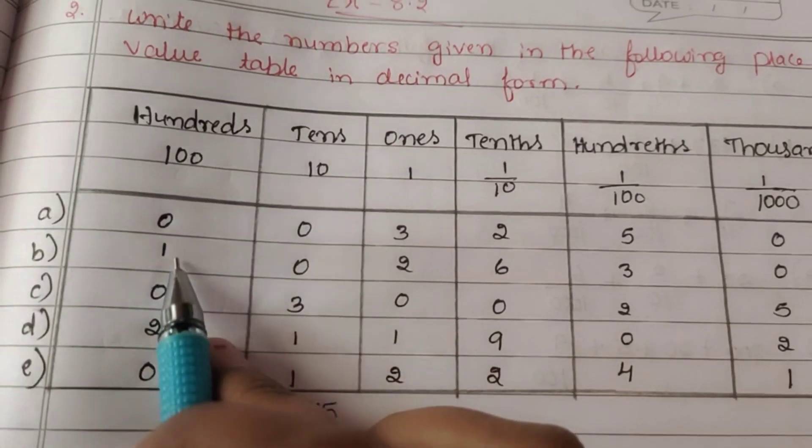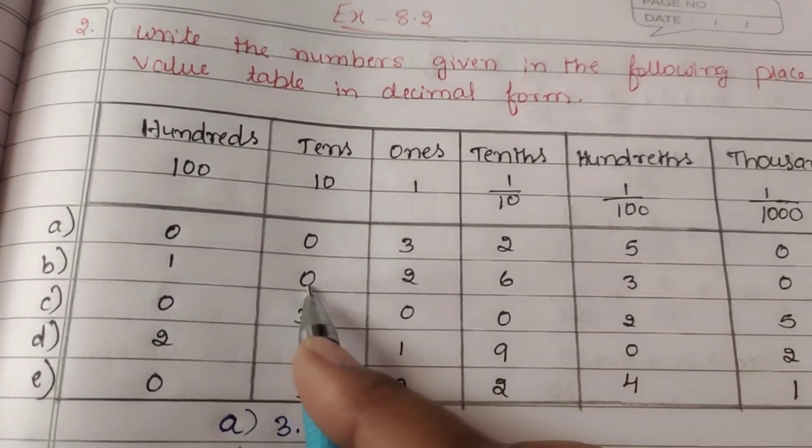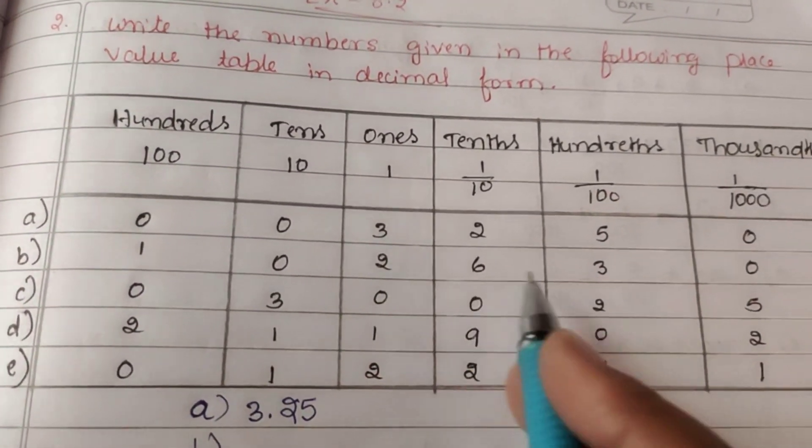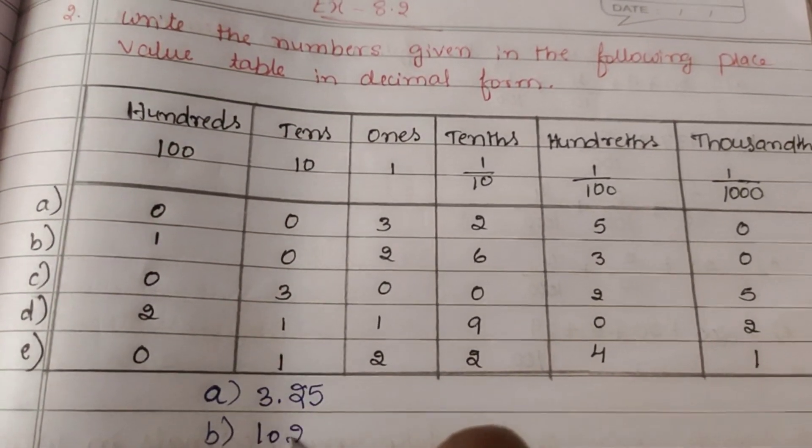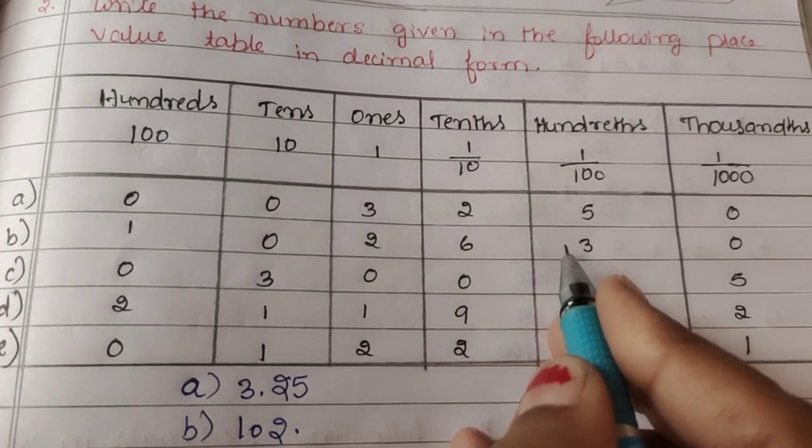Next question: hundreds are 1, so writing 1, 0, 2, 6, 3, 0 gives 102.63. Here zero is in the thousandths place.